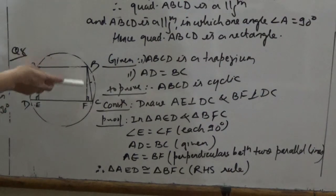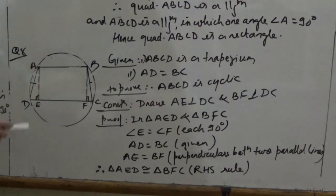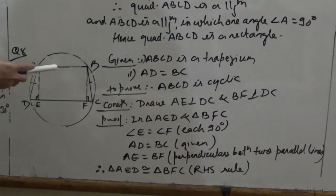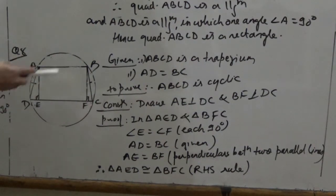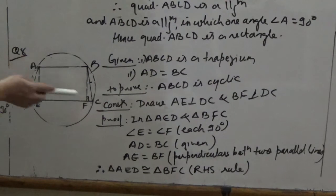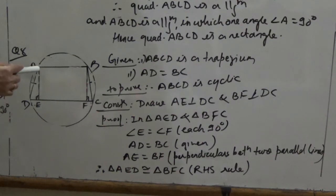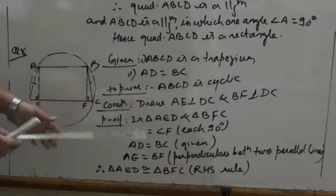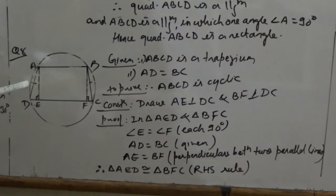For the construction, draw AE perpendicular to DC and draw BF perpendicular to DC. Now we prove triangle ADE and triangle BFC are congruent. Angle E equals angle F, each being 90 degrees; AD equals BC (given); and AE equals BF, since perpendiculars between two parallel lines are equal. Therefore the two triangles are congruent by RHS.